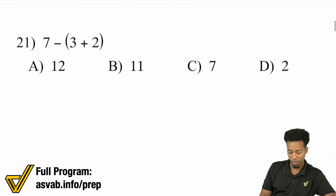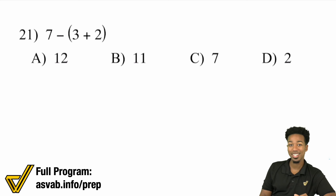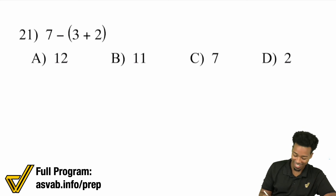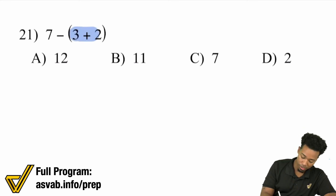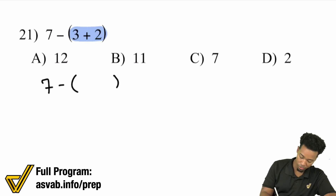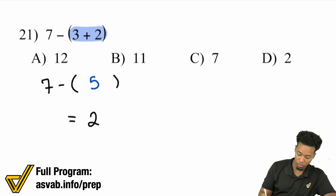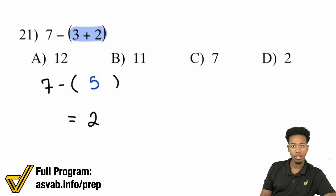Number 21. What you should have been doing at this point is pausing to try them out, then playing to see me do them. We have a group here: 3 plus 2 is in that group. So 7 minus (3 plus 2) — 3 plus 2 is 5, and now we have 7 minus 5, which is 2.